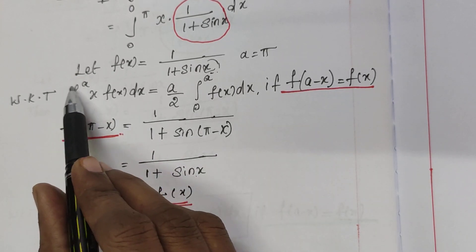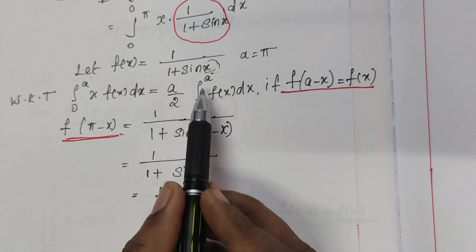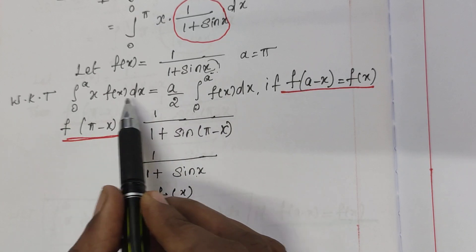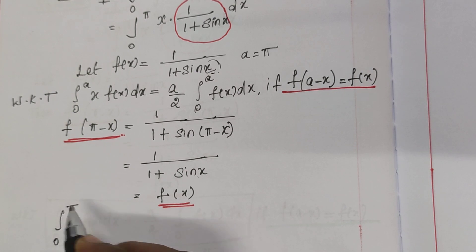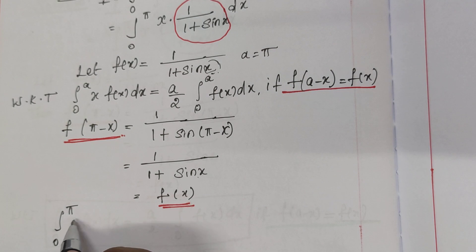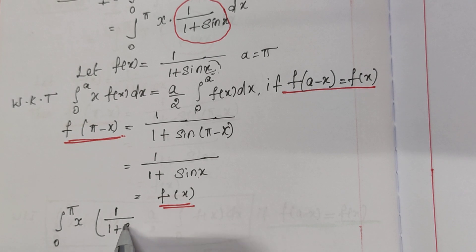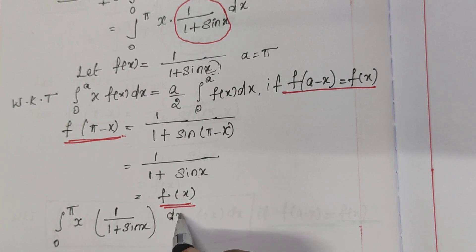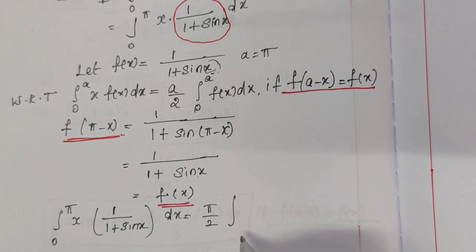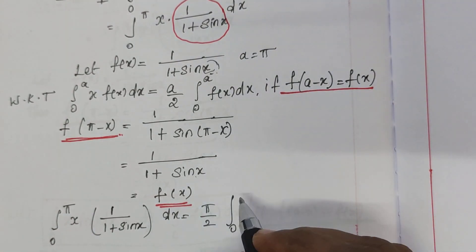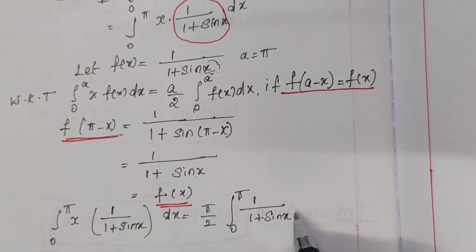Since the condition f(a − x) = f(x) is true, the property is also true. So the integral from 0 to π of x·f(x) dx equals (a/2) times the integral from 0 to a of f(x) dx. With a = π and f(x) = 1/(1 + sin x), we can write: I = (π/2) times the integral from 0 to π of 1/(1 + sin x) dx.